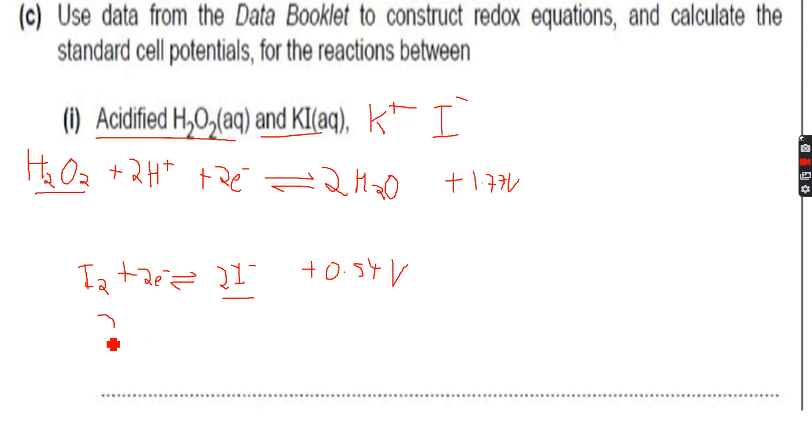First we will invert this equation because 0.54 is smaller than 1.77, so this will become negative 0.54. Then we will add negative 0.54 and positive 1.77, and when I do this on my calculator I get plus 1.23 volts.